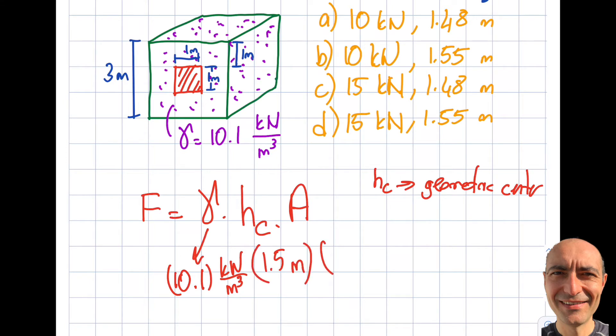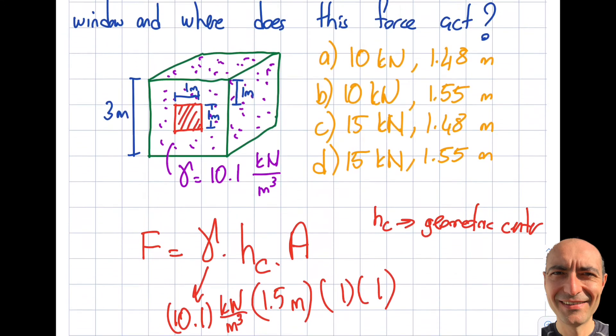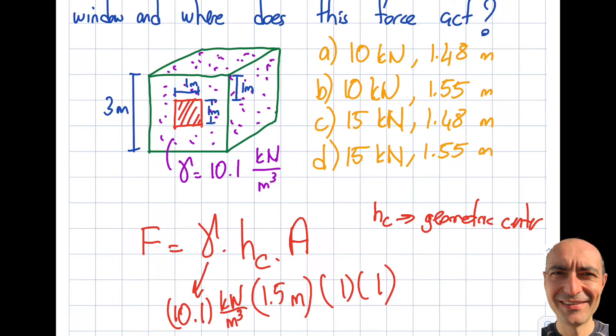What about the area? Well, it seems easy. 1 is the width of it, 1 is the height of it, and from here I will get my F to be 15,150 kilonewtons. So when I look at the choices, you can see that I'm down to C or D. A, B is out. That's good. That's something.